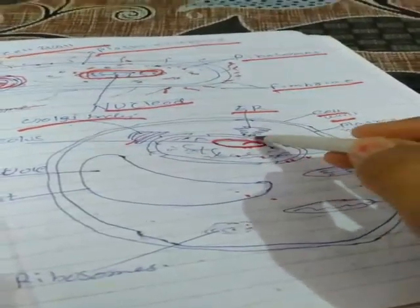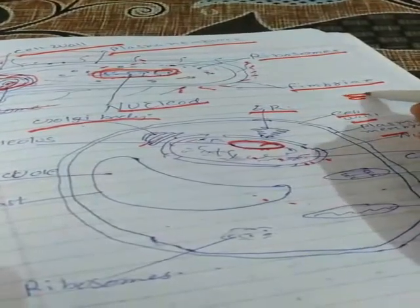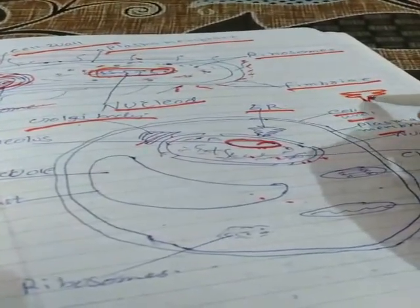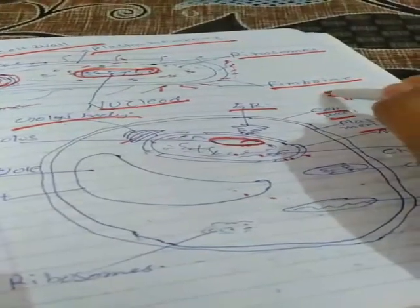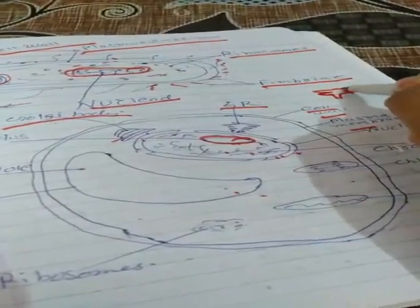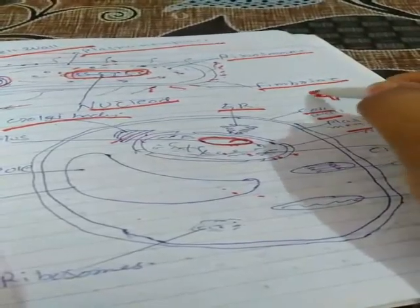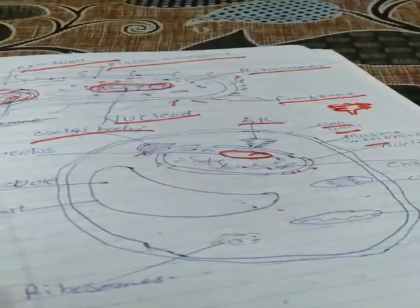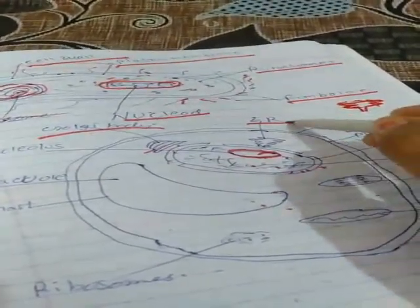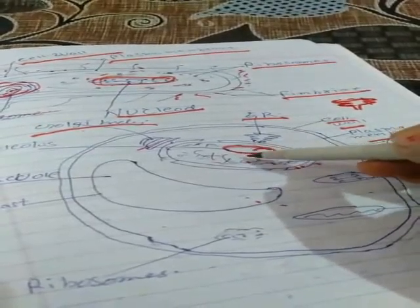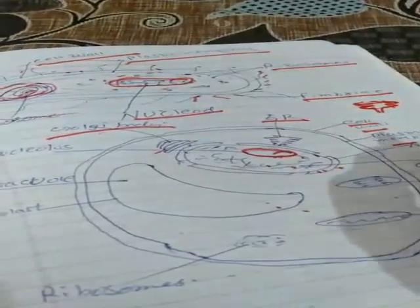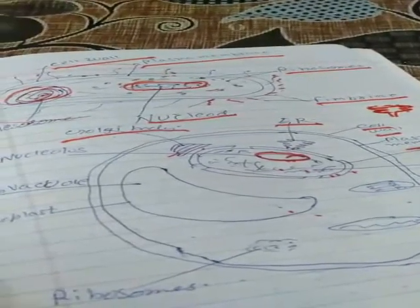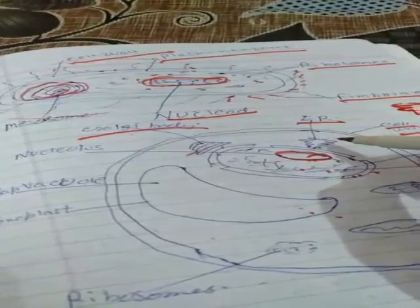Another structure is the endoplasmic reticulum. The first part does not have a dotted structure and has a very smooth surface. The last part has a dotted structure due to the presence of ribosomes. So the endoplasmic reticulum has two portions: the first is smooth, called the smooth endoplasmic reticulum, and the second part is called the rough endoplasmic reticulum, as it consists of ribosomes on its surface.